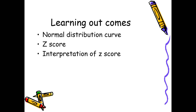68% of the population lies between plus minus one standard deviation around the mean in the normal distribution curve. 95% of the population lies between plus minus two standard deviations of the curve. And when we extend towards the plus minus three standard deviation, we are covering 99% of the population.